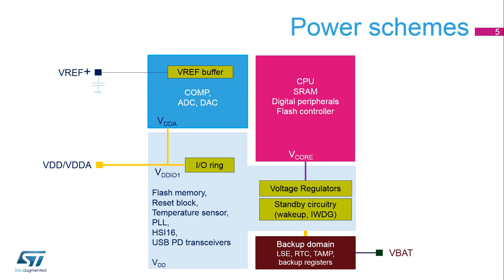STM32G0 devices have several independent power supplies which can be set at different voltages, all tied together. The main power supply is VDD, supplying almost all IOs except those part of the VBAT domain. VDD also supplies the flash memory, the reset block, temperature sensor, and all internal clock sources.